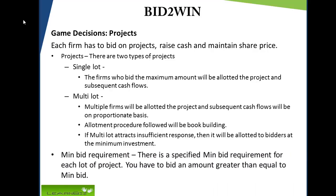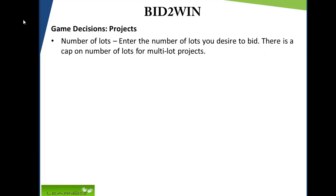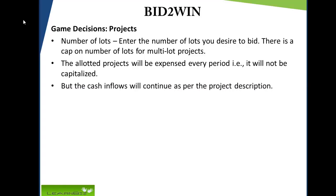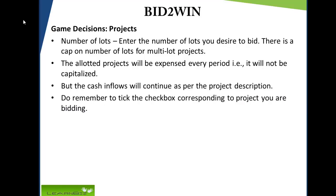Minimum bid requirement: there is a specified minimum bid requirement for each lot of project; you have to bid an amount greater than the minimum bid. Enter the number of lots you desire to bid — there is a cap on number of lots for multi lot projects. The allotted projects will be expensed every period, that is they will not be capitalized, but the cash inflows will continue as per the project description. Remember to tick the check box corresponding to the project you are bidding.